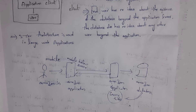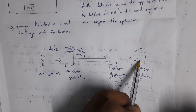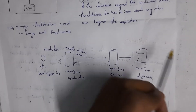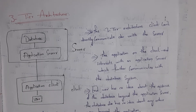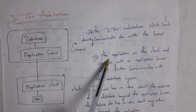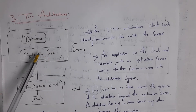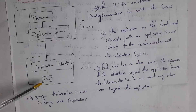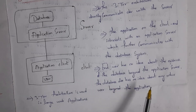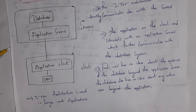Three-tier architecture is used in web-based applications like Amazon, Facebook, and so on. In three-tier architecture, the user will not interact with the database directly — instead, he will interact with the server-side application, so whatever data is present inside the database will be secure. The application on the client end interacts with the application server, which further communicates with the database system. The end user has no idea about the existence of the database beyond the application server, and the database also has no idea about any other user beyond the application.